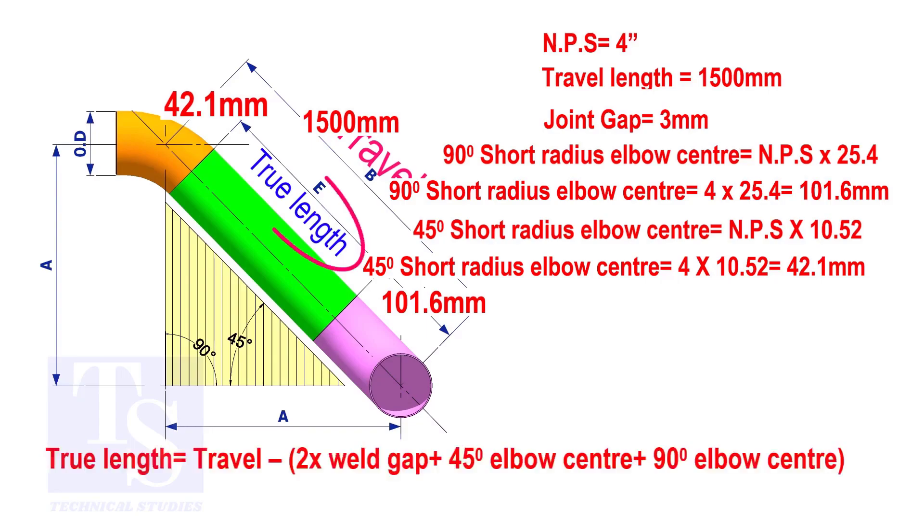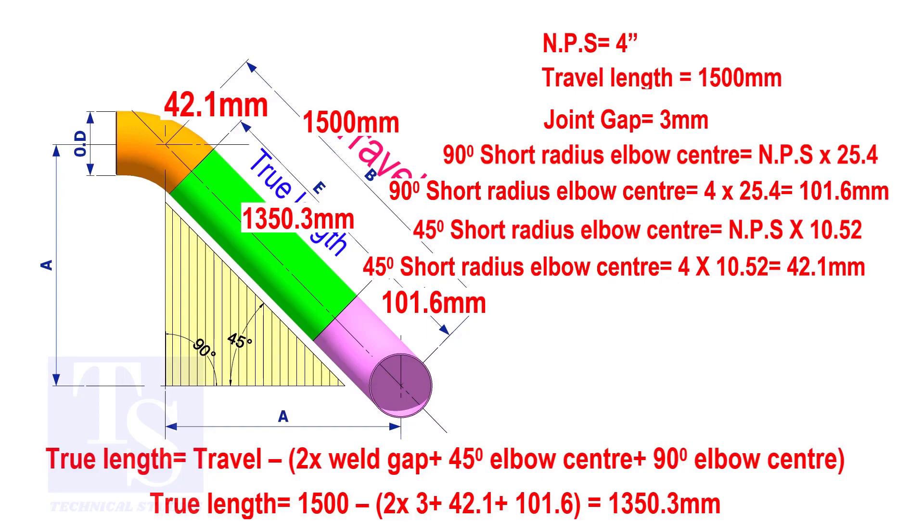To calculate the true length of the pipe, subtract two weld gaps plus both elbow centers from the travel length. The true length of the pipe is 1350.3 millimeters.